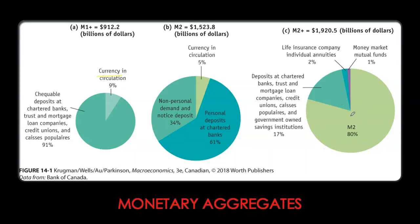Also note that as the monetary aggregate becomes bigger, there is a higher opportunity cost of converting these assets into cash. These near monies generate interest income, so whenever I convert them into M1-only assets — cash or checkable deposits — I give up that interest income. Therefore, the opportunity cost of holding M1-only assets increases as we move from a narrower to a broader monetary aggregate.